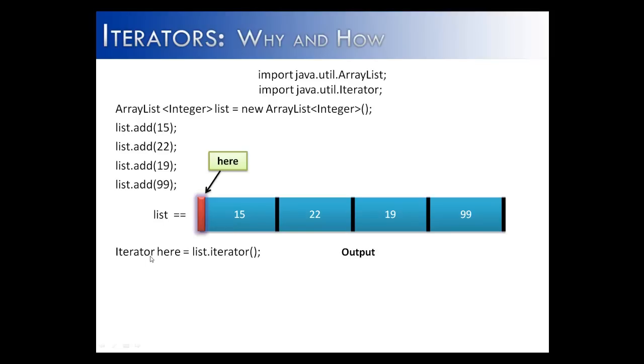And you notice when you say iterator, the name of the object here equals list, which is the name of the ArrayList that we're using, and then iterator.